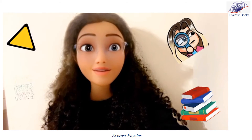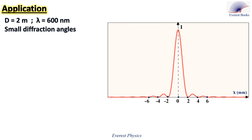This is important. Let's solve an application. The following graph represents the light intensity of a single slit Fraunhofer diffraction pattern as a function of the abscissa x on the screen. The distance between the slit and the screen is 2 meters, and the wavelength of the light is 600 nanometers. The angles of diffraction of the fringes are small.